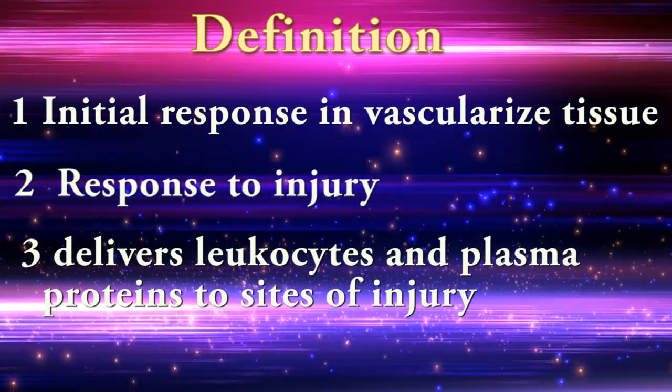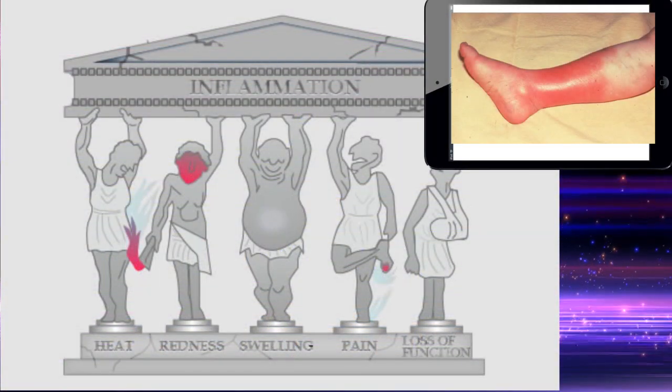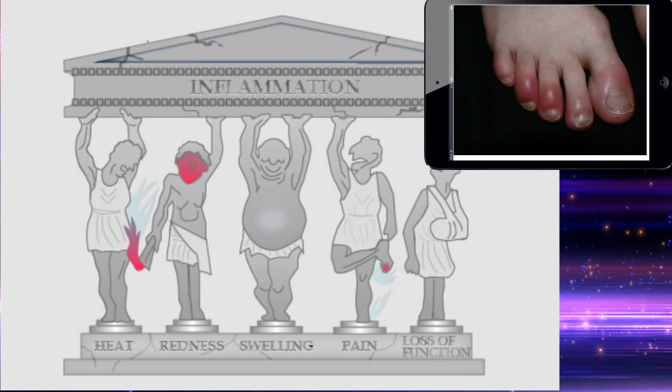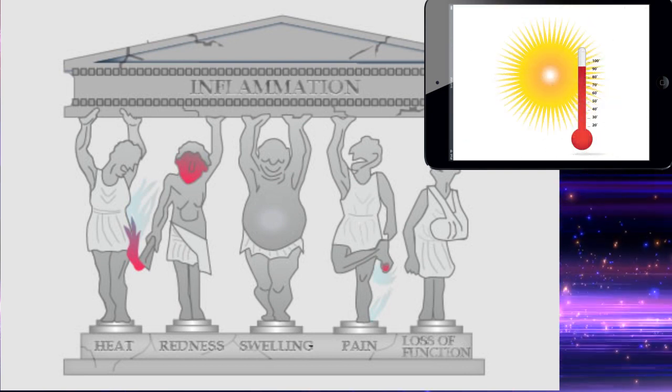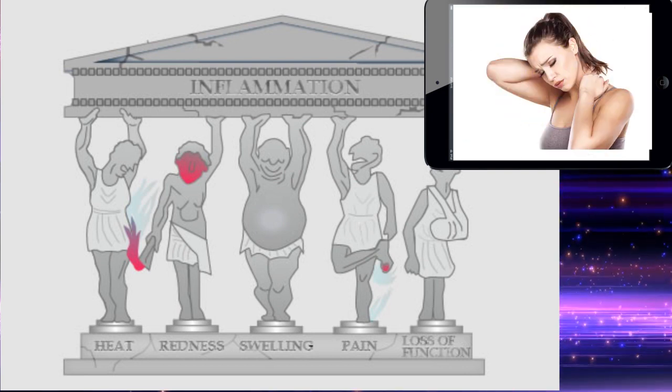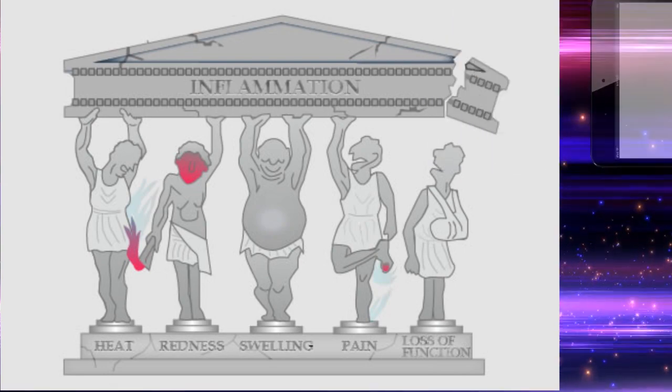In acute inflammation we can see five cardinal signs: rubor or redness, tumor or swelling, calor or heat, dolor or pain, and functio laesa or loss of function.